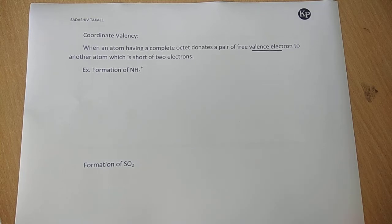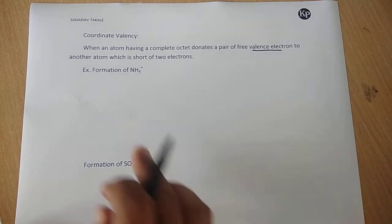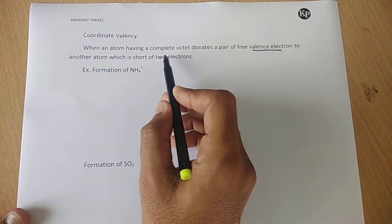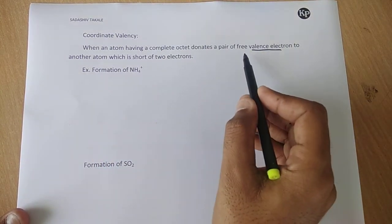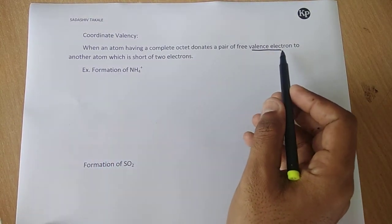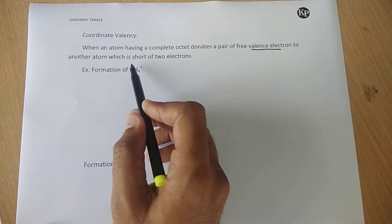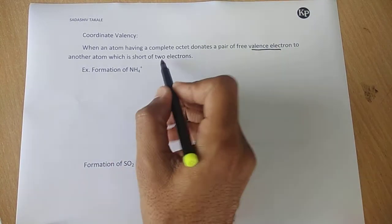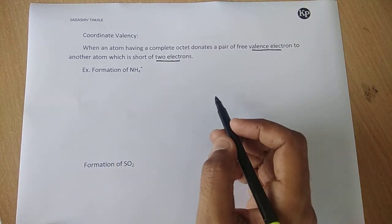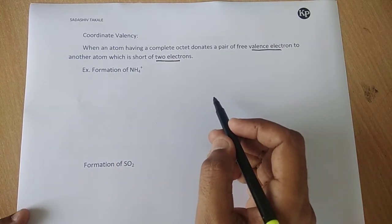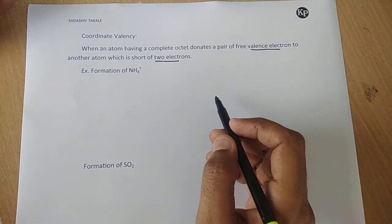Hi friends, today we are going to learn coordinate valency or coordinate bond, hydrogen bond, and metallic bond. Let's see one by one. Coordinate valency: when an atom having a complete octet donates a pair of free valence electrons to another atom which is short of two electrons, it is called coordinate valency or coordinate bond.